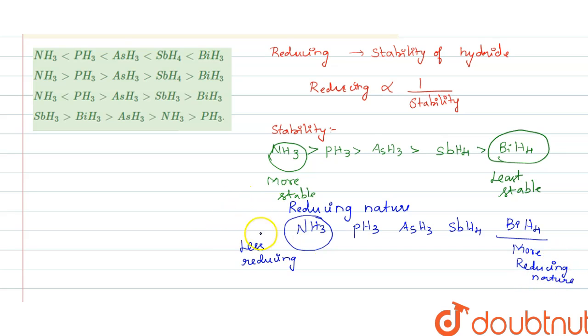So the order for the reducing nature is BiH3 greater than SbH3 greater than AsH3 greater than PH3 greater than NH3. Ammonia is capable of reducing very less when compared to BiH3.